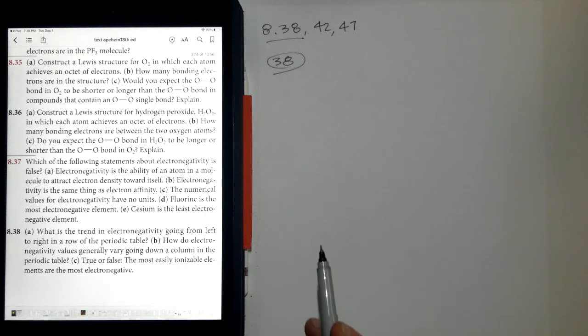So this is 8.38. What is the trend in electronegativity going from left to right in a row on the periodic table?